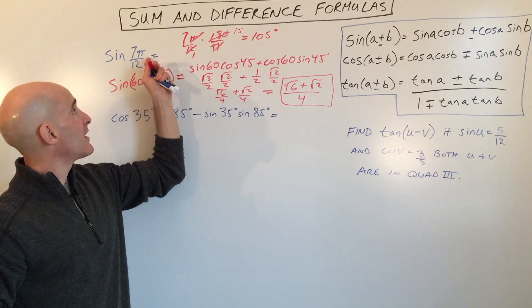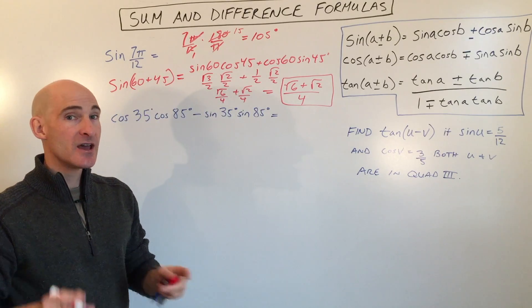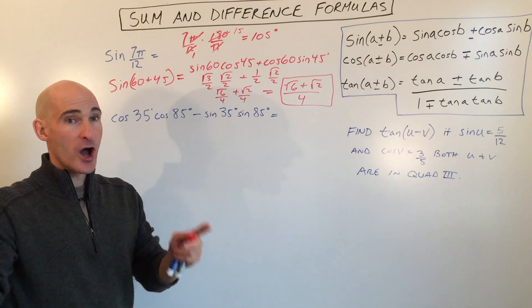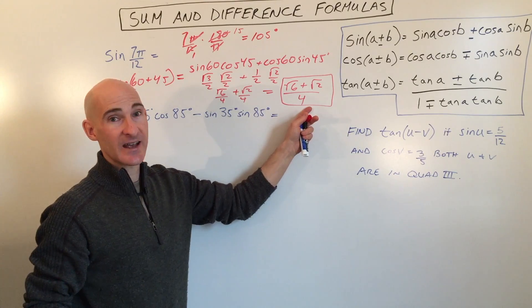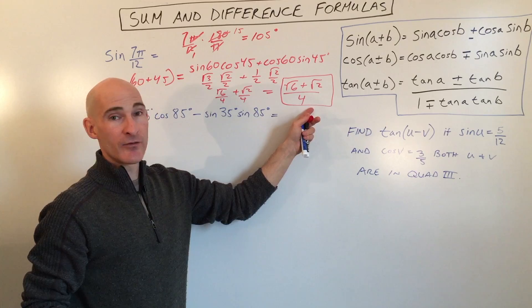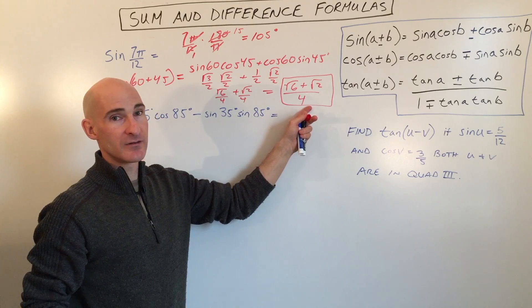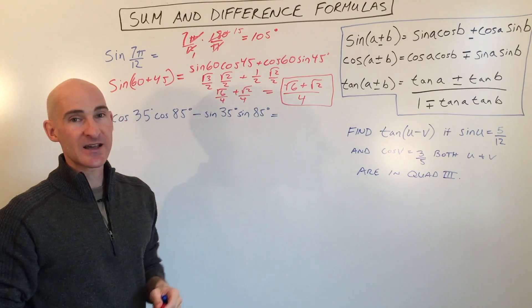You can, of course, go to your calculator and find out what sine of 105 degrees is. But that's going to give you a long decimal. This is an exact answer. So sometimes it's helpful to have the exact value for sine of 105 degrees. And that's how you would do it.